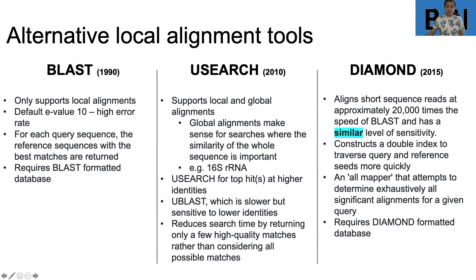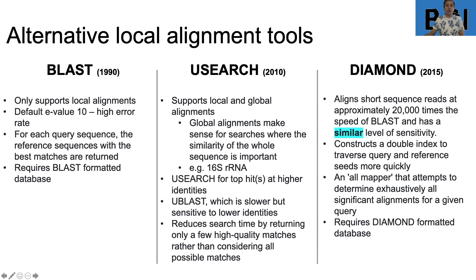Diamond is estimated to be about 20,000 times faster than BLAST, as stated directly in the Diamond paper, with a similar — though not identical — level of sensitivity. In bioinformatics, faster tools often trade off some accuracy and sensitivity to detect true positives. One way Diamond achieves speed is by constructing a double index: not only indexing the database but also indexing the query. Like BLAST, it is an all-mapper, and you are required to format your own database for it.